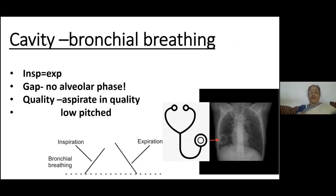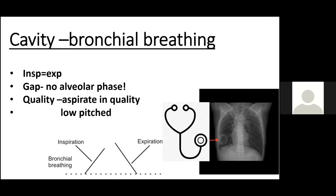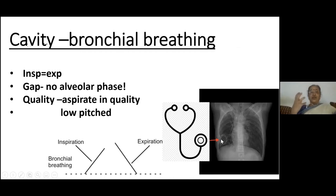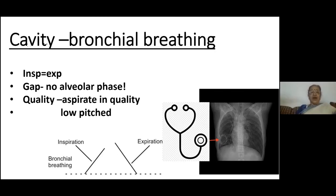In a cavity, bronchial breathing — again, in a cavity, inspiration becomes equal to expiration because air comes with turbulence into it. There is a gap because the cavity has no alveolus — cavities are destroyed parts of the lung. There is no alveolus in the cavity, so during that place where you should have got the alveolus, the air has no alveolus. So there is a gap — that is the alveolar phase.